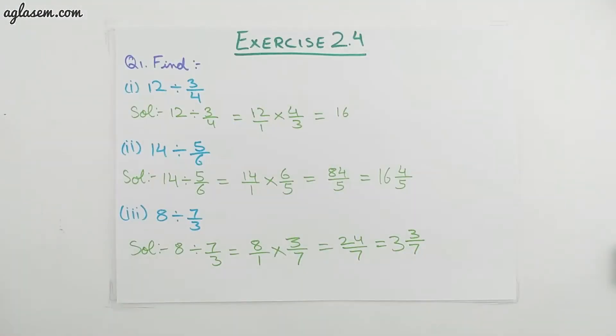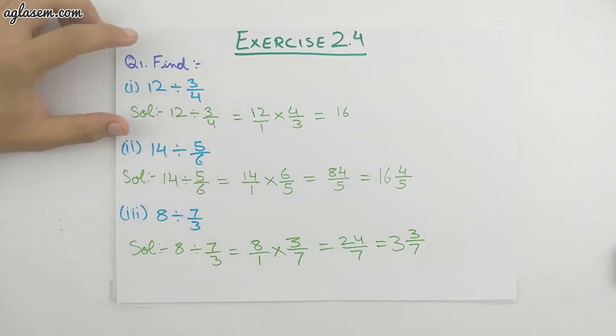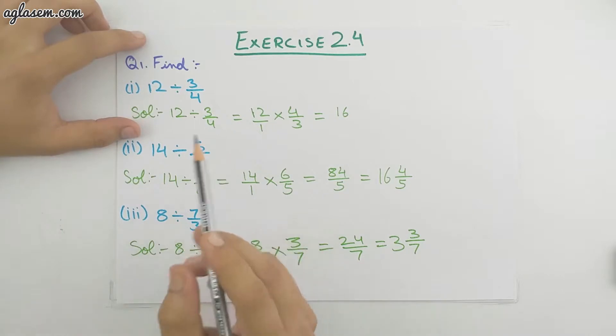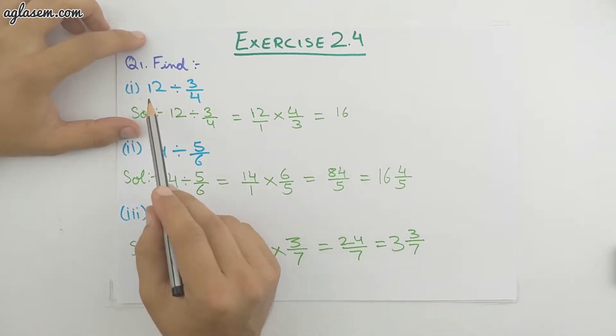Welcome to Aglasem School. Today in this video we are going to solve Exercise 2.4 of Chapter 2, that is Fractions and Decimals of Class 7th NCERT Mathematics. So let's start with the exercise 2.4. The first question says find — this question has sub-parts, let's solve them one by one.